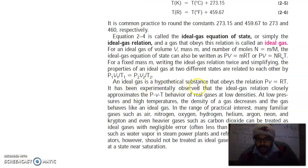An ideal gas is a hypothetical substance that obeys the relation PV equals RT. It has been experimentally observed that the ideal gas relation closely approximates PVT behavior of a real gas at low densities. At low pressure and high temperature, the density of gas decreases and the gas behaves like an ideal gas.